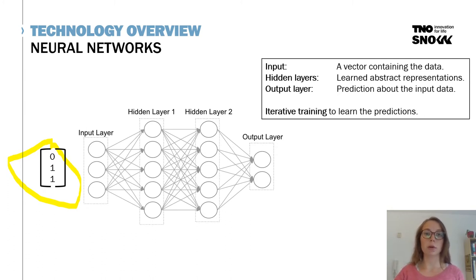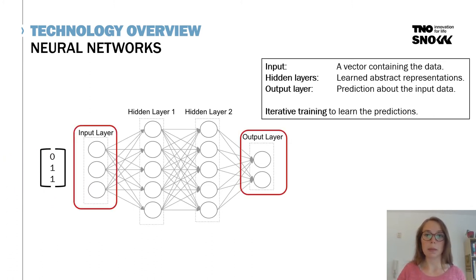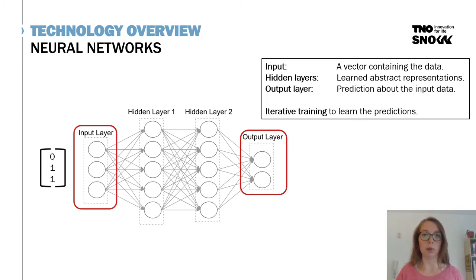Neural networks are not new, but recently with new computational power available, they are used a lot — especially in the field of imaging — to make predictions about data, and they are really powerful. To emphasize again: the input layer and the output layer are fixed in size; you cannot change these values.